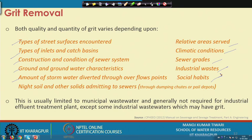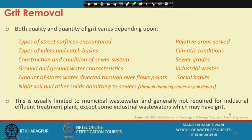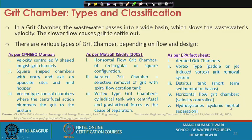Grit removal is usually limited to municipal wastewater and is generally not required for industrial effluent treatment plants, except for some industrial wastewaters that may have grit. Industrial processes are fairly organized and the kinds of materials expected in those systems are fairly standard. If the processes come from controlled systems with no possibility of grit materials entering the flow, one may actually avoid grit removal. However, in municipal sewage it is almost a certain unit that needs to be provided, as municipal sewage typically comes from open channels or sewer lines and contains a lot of grit material.